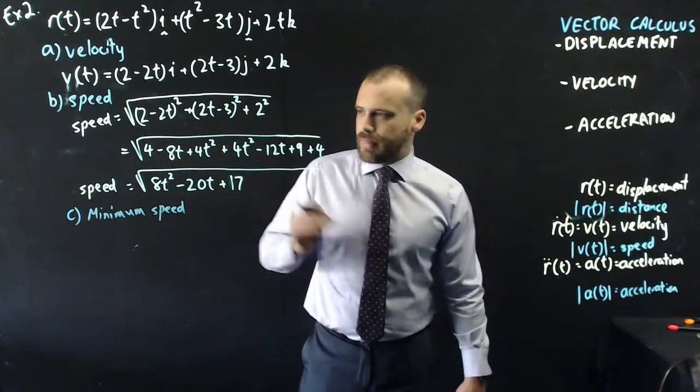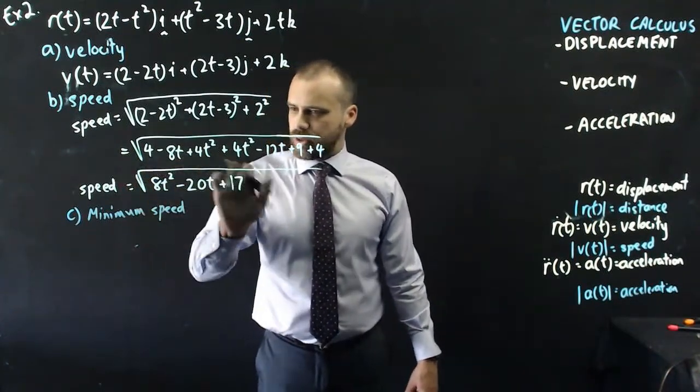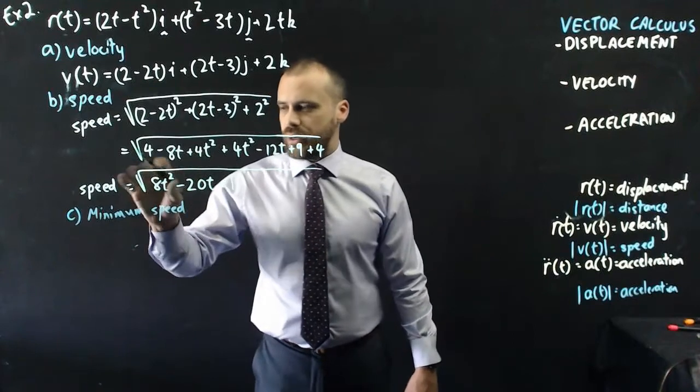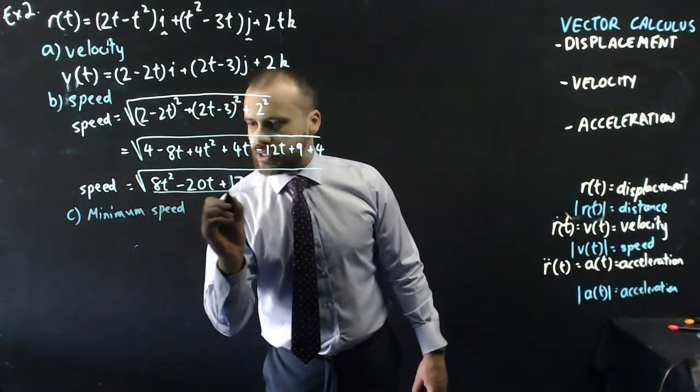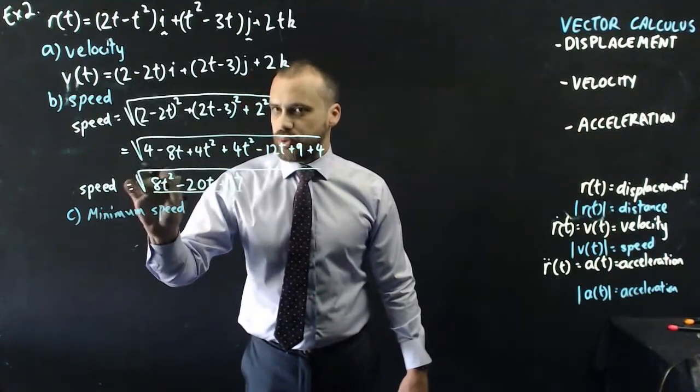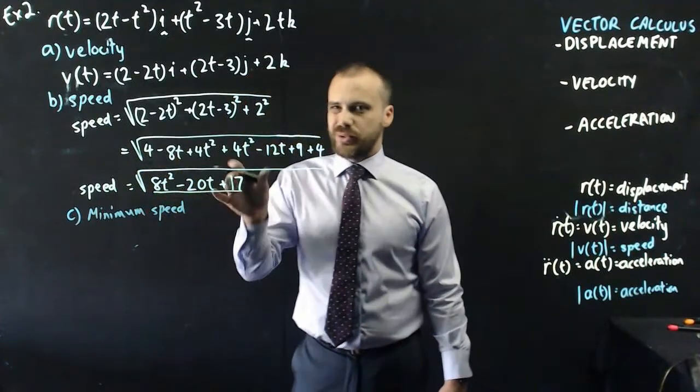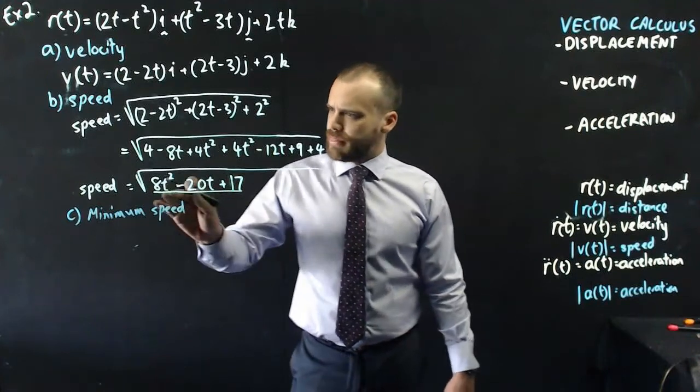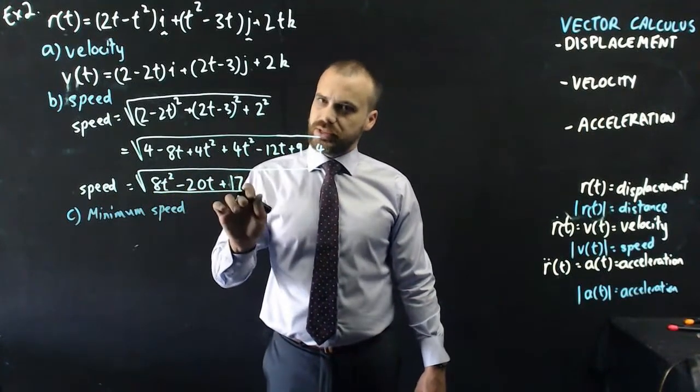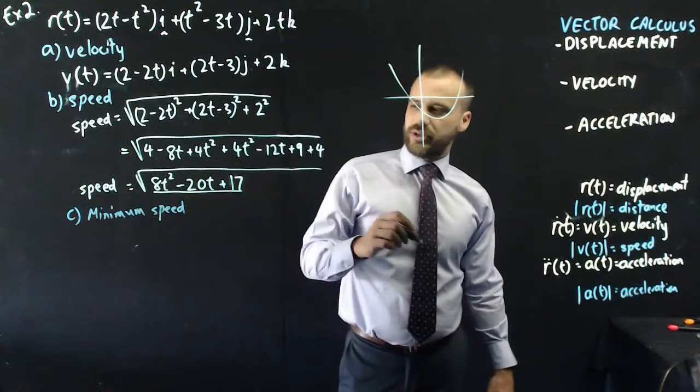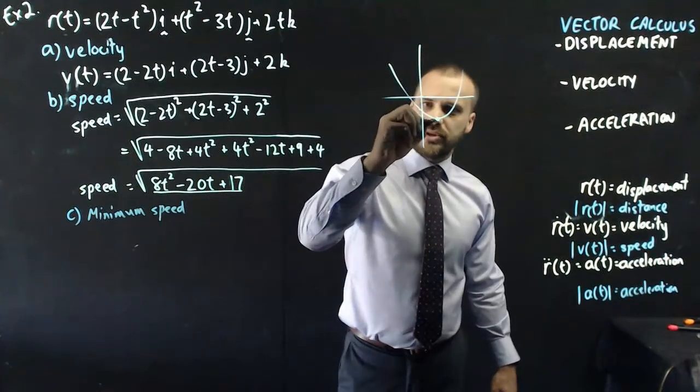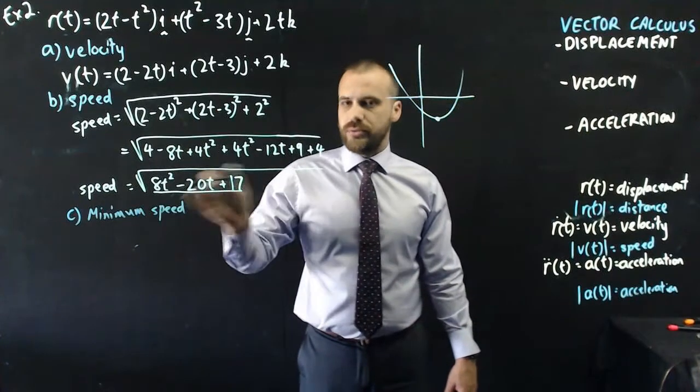Which brings us to part c, which is finding the minimum speed. Now, we want to know when this will be a minimum. Now, the whole thing will be a minimum when this is a minimum, right? If the square root's a minimum, then the thing inside would also have to be at a minimum value. 8t squared minus 20t plus 17, that's a quadratic.